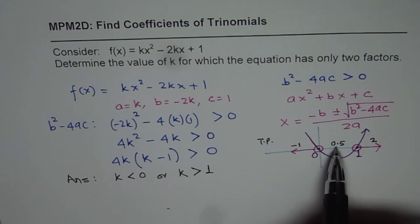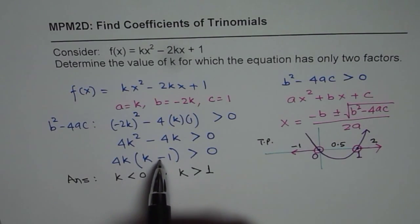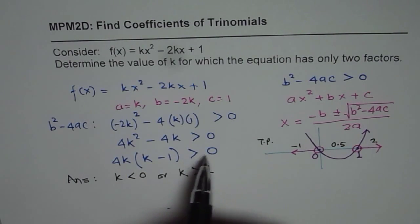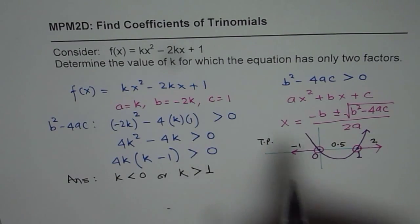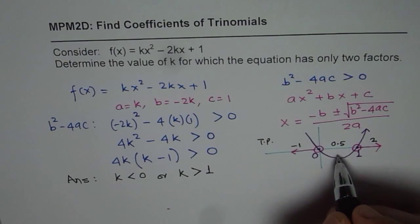But if I write 0.5, 0.5 times 4 will be 2 which is positive and 0.5 minus 1 will be minus 0.5. When you multiply negative with positive you get negative which is less than 0 not greater than. So that is not solution. So this part is not solution.